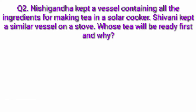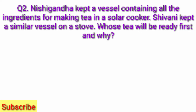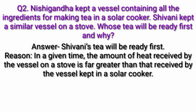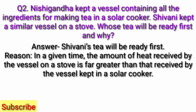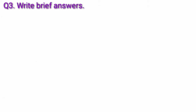Question 2: Nishigandha kept a vessel containing all the ingredients for making tea in a solar cooker. Shivani kept a similar vessel on a stove. Whose tea will be ready first and why? Answer: Shivani's tea will be ready first. Reason: In a given time, the amount of heat received by the vessel on a stove is far greater than that received by the vessel kept in a solar cooker.